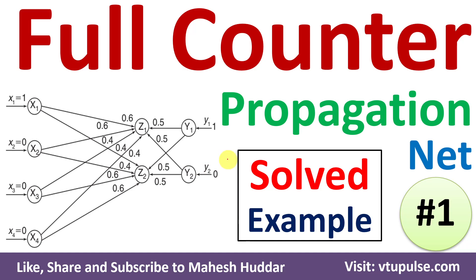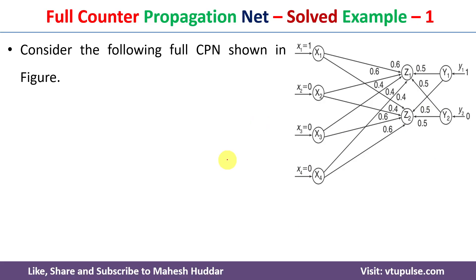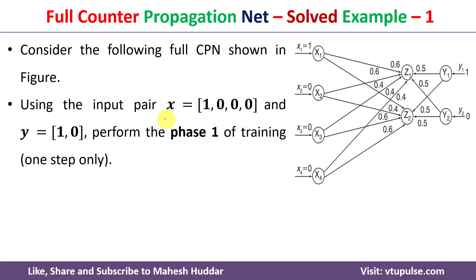Welcome back. In this video I will discuss full counter propagation net with a simple solved example. We have been given a full counter propagation net as shown in the figure. The input pair x is equal to 1 0 0 0 and y is equal to 1 0, as you can notice from the figure. We need to map this input pair to one of the clusters, either z1 or z2.